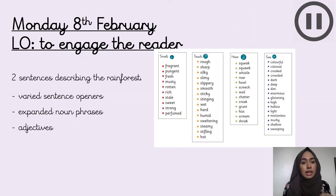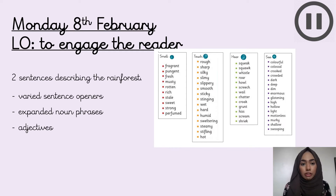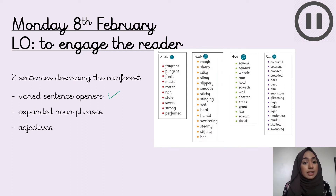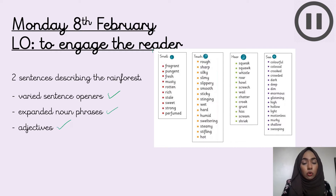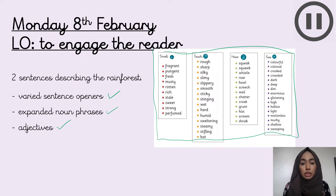Now that we've looked at the new vocabulary and explained why it works, you're going to write the first two sentences which describe the rainforest. You can use varied sentence openers to make sure your sentences all sound different, expanded noun phrases, and adjectives. You've got your word mat on Seesaw and your sentence openers in your book. Once you've written the first two sentences describing the rainforest, come back and we will go through the rest of the text.